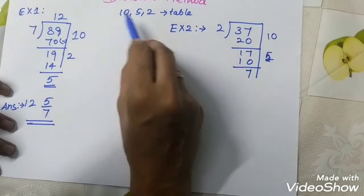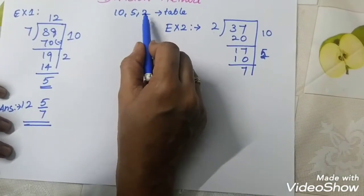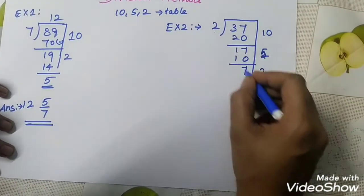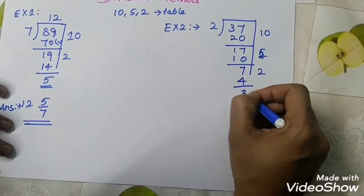So, 10, 5 already you can use. So, you can take 2. 2, 2's are 4. 2, 2's are 4. Remaining value is 3.